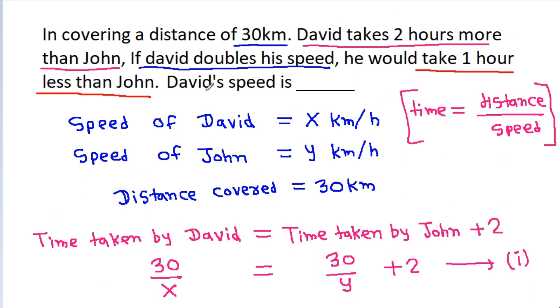So, the speed of David is 5 km per hour. Thank you.